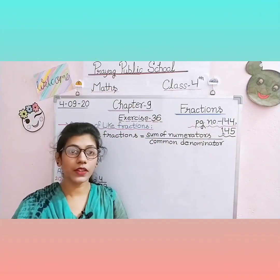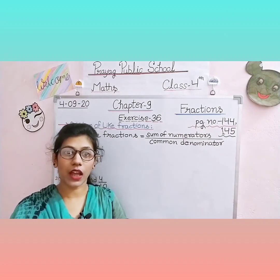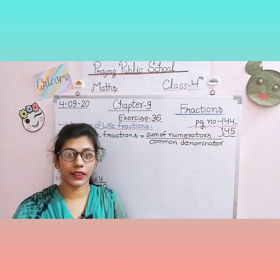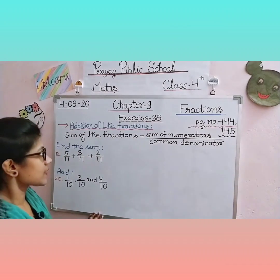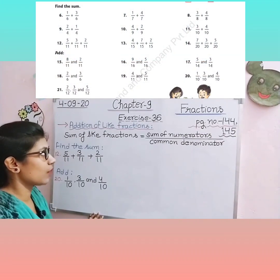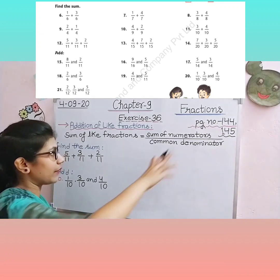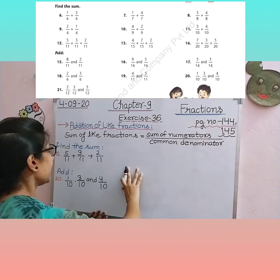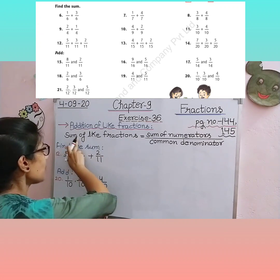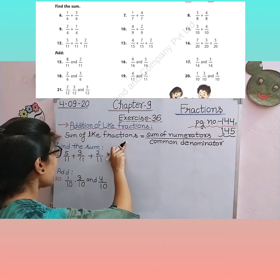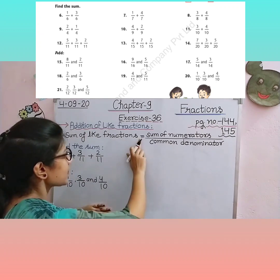Now we come to our next topic for today — addition of like fractions. Like fractions ko kaise add karte hain, jodte kaise hain? Exercise number 36 like fractions ke addition pe based hai, on page number 144 and 145. Sabse pehle ek rule hota hai, ek formula hota hai — sum of like fractions.